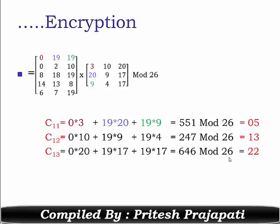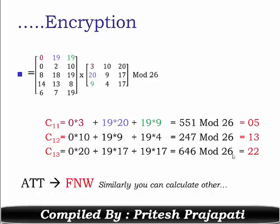You will get C(1,3) equal to 466 mod 26, giving 22. Similarly, you can find other values from C(2,1) up to C(3,3). Your plaintext message 'ATT' is now converted into F, N, and W, which are the equivalent values of the numbers 5, 13, and 22.